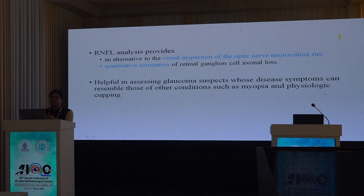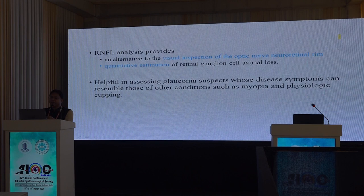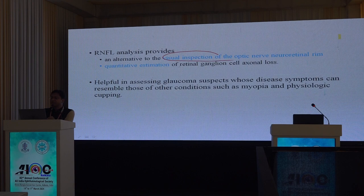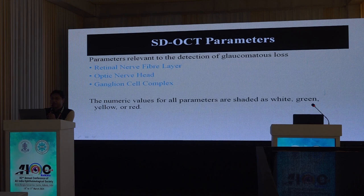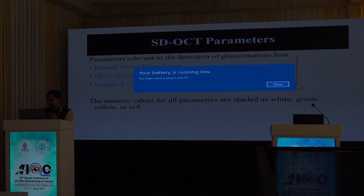RNFL analysis is a pre-perimetric tool to assess structural changes. Its great advantage over perimetry is that it is more objective — less dependent on patient cooperation. It has shorter examination times and provides quantitative measurements of optic nerve thickness. Using OCT you can analyze RNFL, the optic nerve, and the ganglion cell complex — all three parameters help in detection.